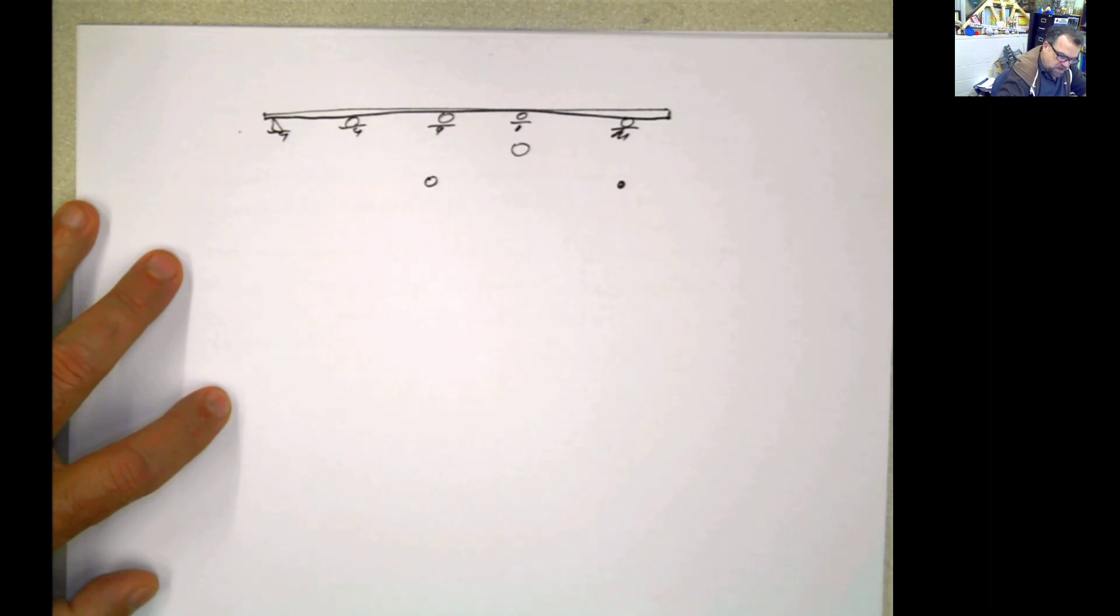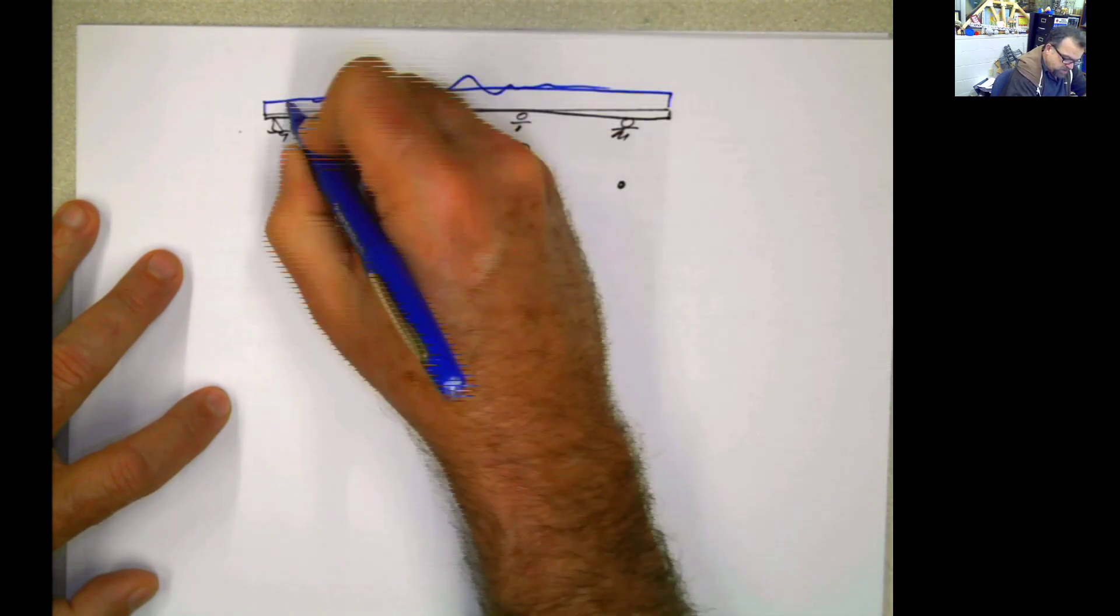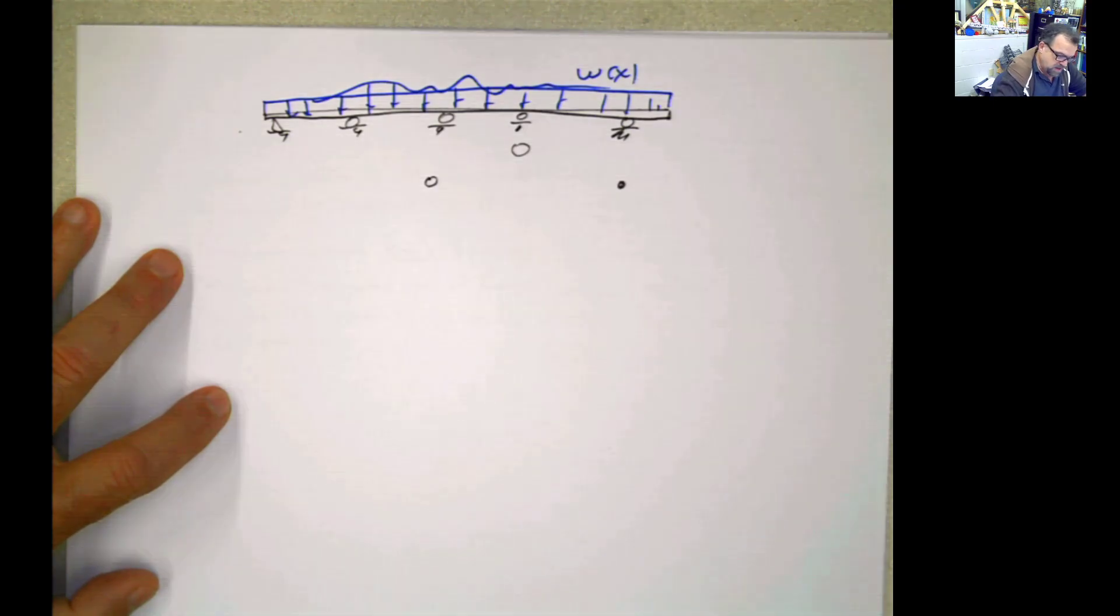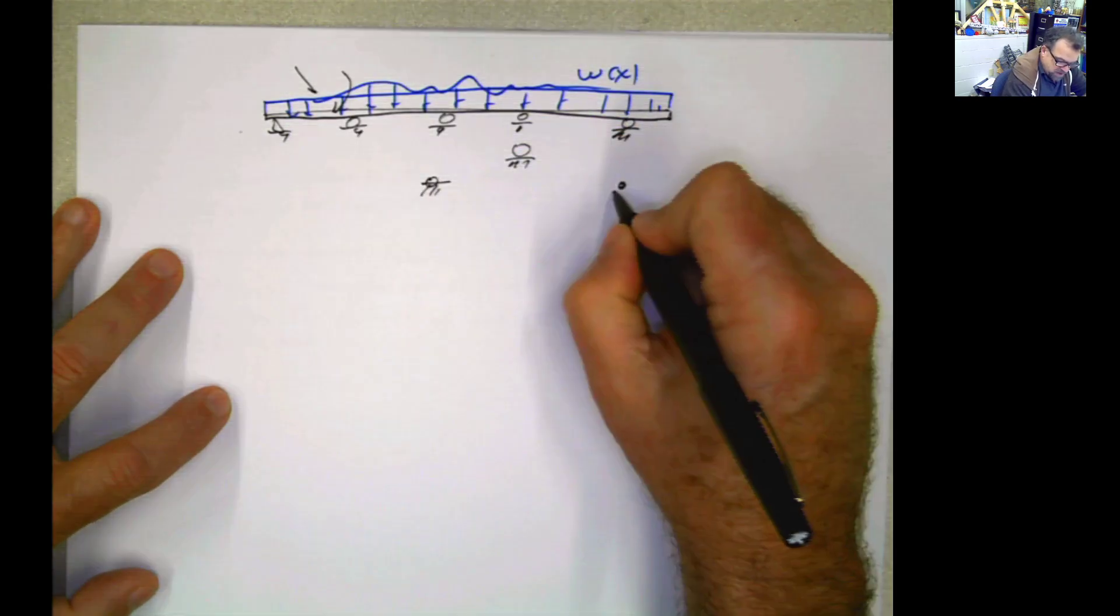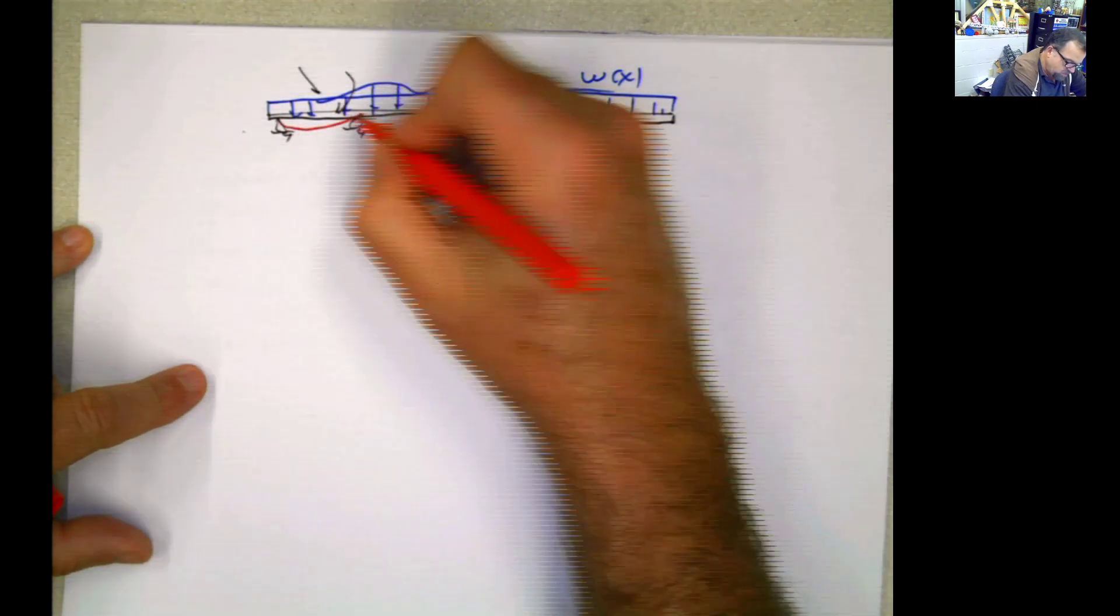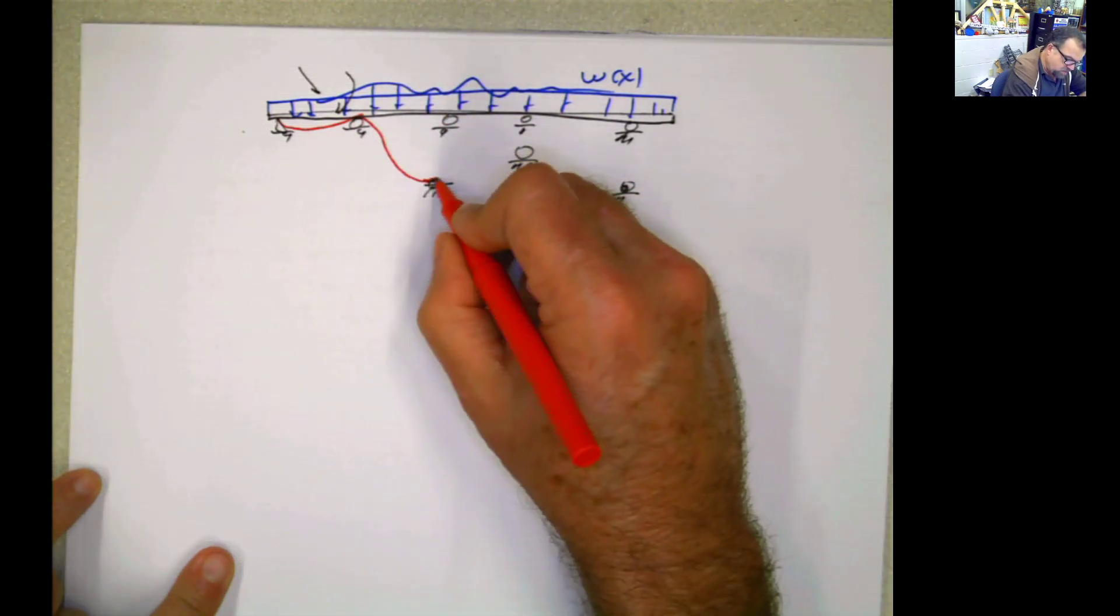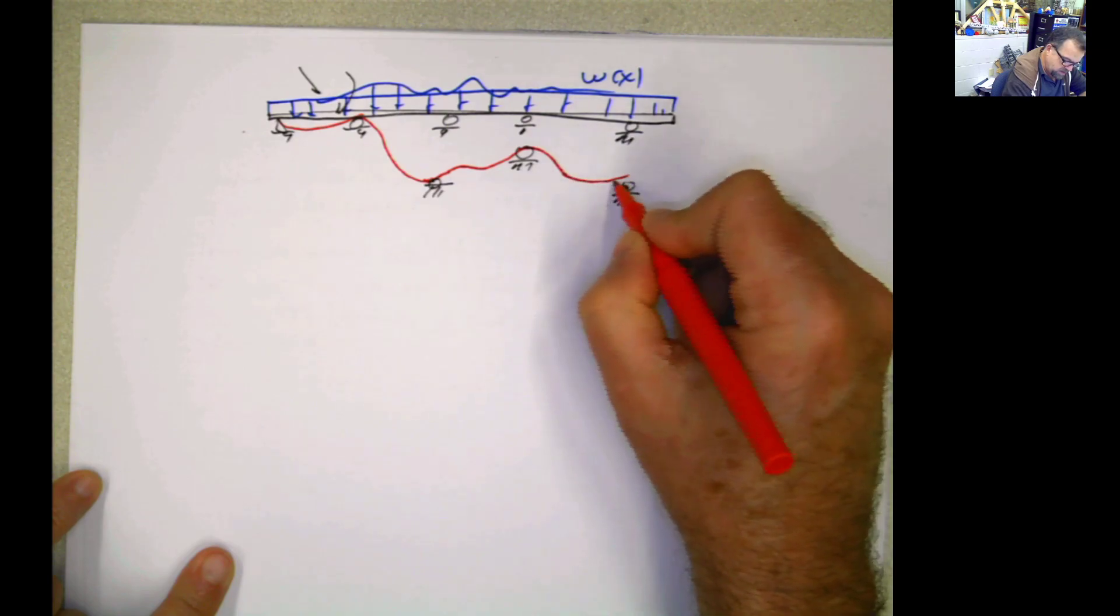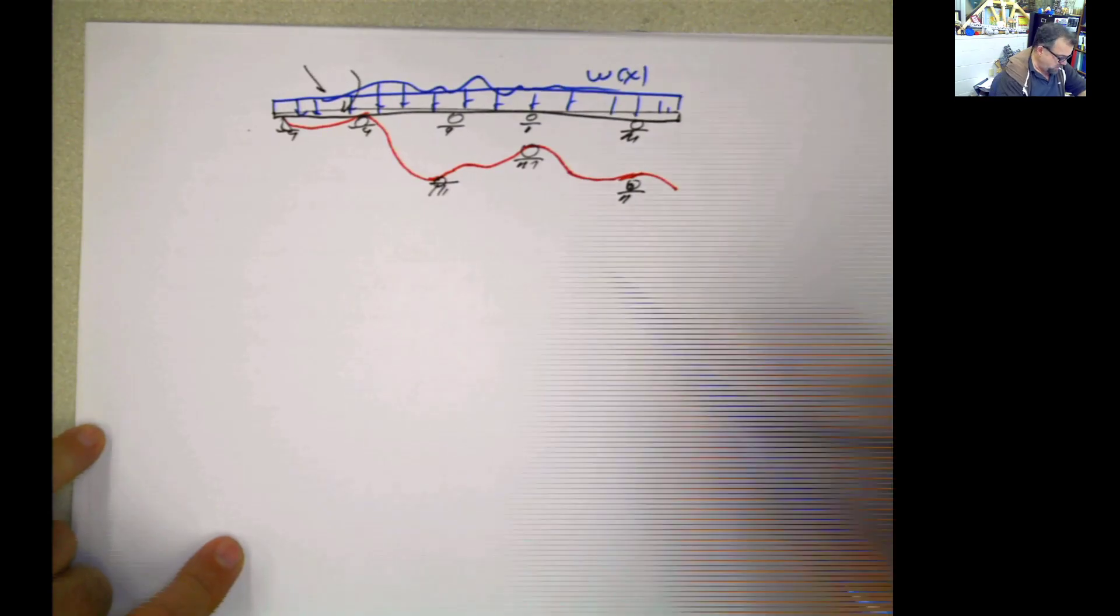Let's say that the original condition of this was something like that. And of course it has a load, any load that changes in terms of x. And we're going to have any type of forces applied there, forces, moments. We're going to have settlements in the supports. And the deflected shape of something like this, of course this is super exaggerated, but it will be something like this.